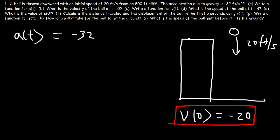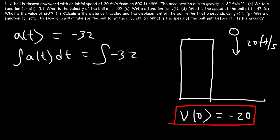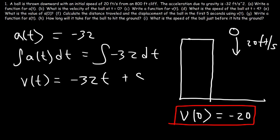Now what about part C? Write a function for v of t. What we need to do is integrate this function. So the antiderivative of a of t dt is going to equal the antiderivative of negative 32 with respect to time. You need to know that the antiderivative of the acceleration function will give you the velocity function. The indefinite integral of negative 32 is negative 32t plus some constant C.